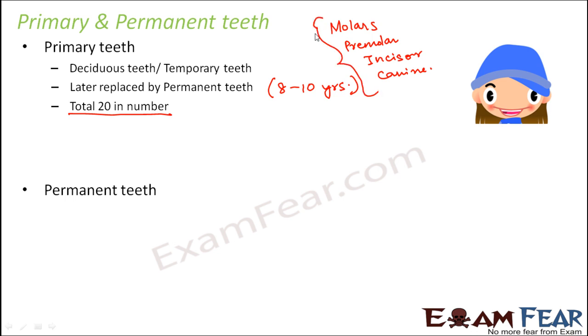When you talk about the primary teeth, the 20 total primary teeth which are present, out of them eight are incisors, four are canine, and eight are molars. No premolars exist in the primary teeth set.